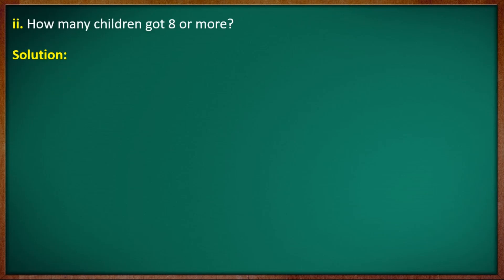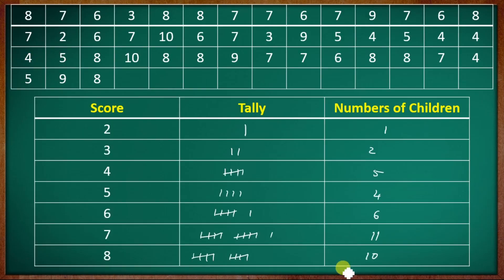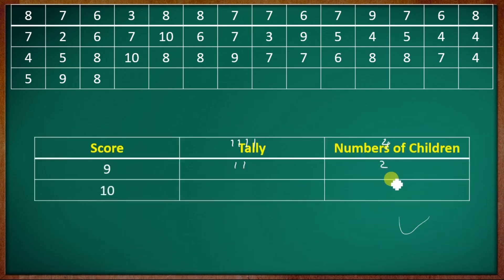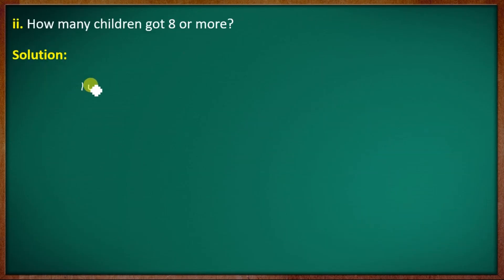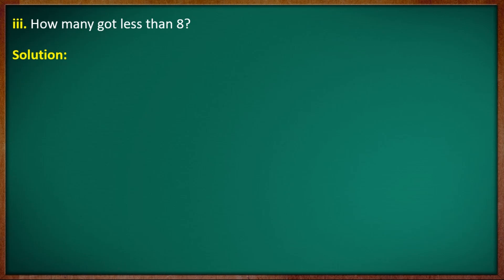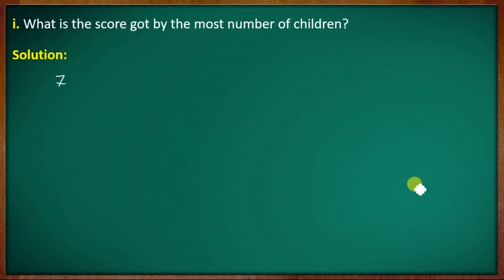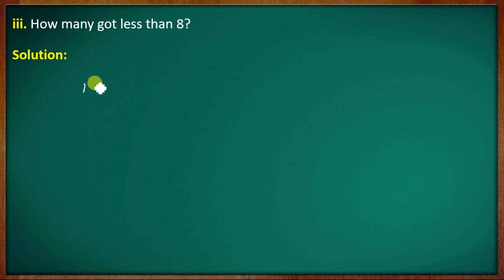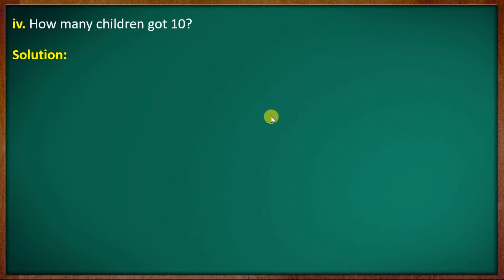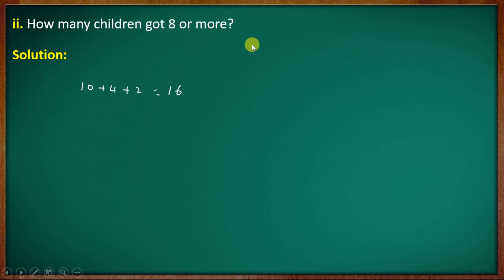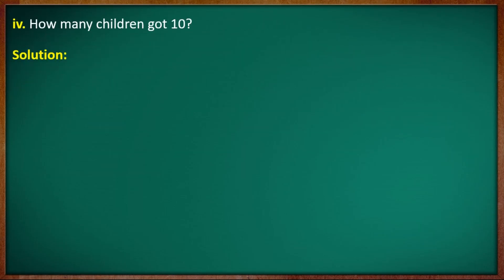Second: how many children got 8 or more? Score 8 is 5, score 9 is 4, score 10 is 2. So 5 plus 4 plus 2 is 11. Wait — 10 plus 4 plus 2 is 16. Third: how many children got less than 8? The counts for scores less than 8 add up: 11 plus 6 plus 4 plus 5 plus 2 plus 1 equals 29. Fourth: how many children got 10? The answer is 2.